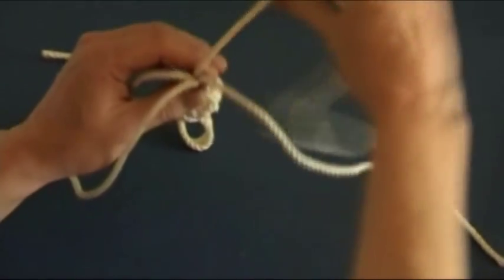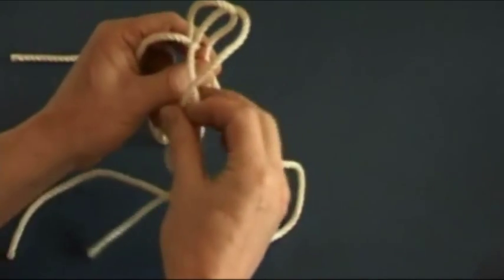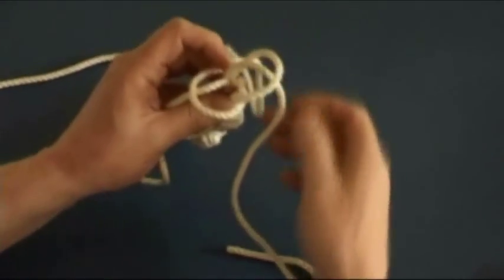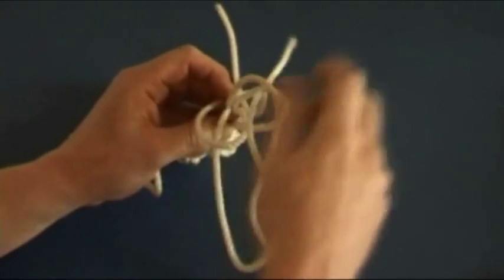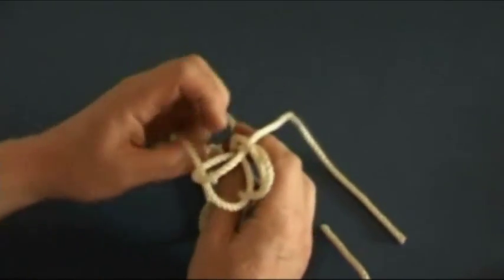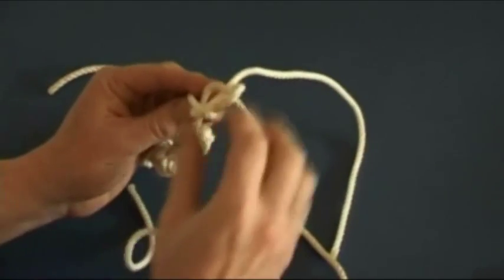I am going to tie a crown knot. That is just passing one lead over the lead next to it. I am doing this in a clockwise direction. You could do it in an anti-clockwise direction, but you need to remember which way you started this knot because it helps later on when we get to tighten things up. So a clockwise crown knot with the bell rope upside down.